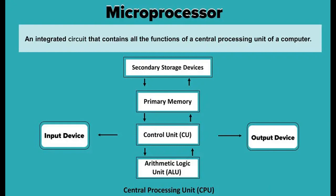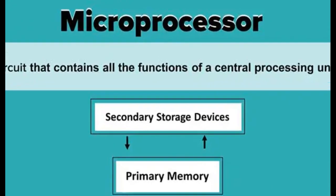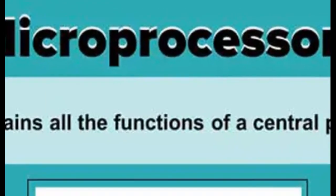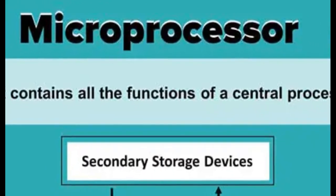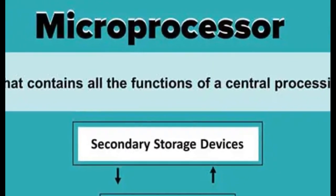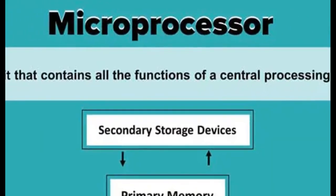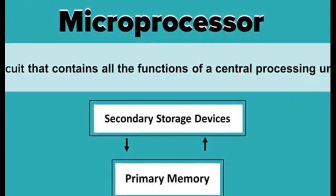Data bus: The data bus is used to transfer data between memory and processor, or between an I/O device and the processor. For example, an 8-bit processor will generally have an 8-bit data bus, and a 16-bit processor will have a 16-bit data bus.